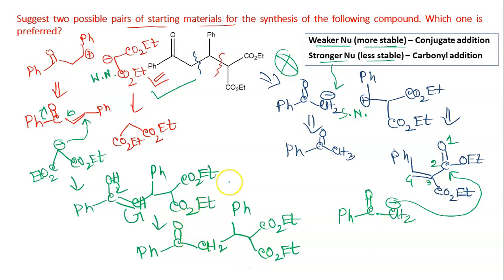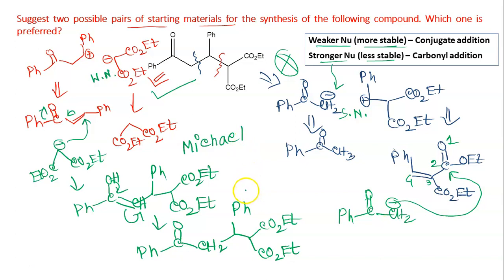This correct pathway — using the weaker nucleophile from diethyl malonate attacking at the beta carbon of the enone — is actually the Michael reaction, which will be discussed in the next video. The Michael reaction is the most important reaction under nucleophilic addition to C=C multiple bonds. It is a named reaction and we will see its full mechanism, why it is important, and some applications.